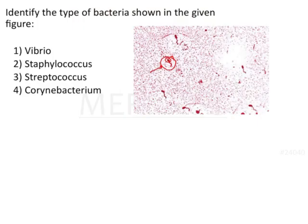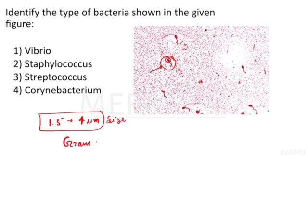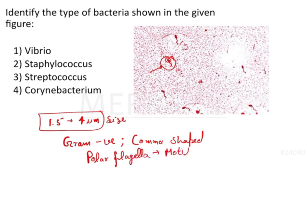Now if we talk about the comma-shaped Vibrio in detail, these bacteria are generally 1.5 to 4 micrometers in size. These are gram-negative bacteria, comma-shaped bacteria. They have polar flagella, and since they have flagella they will be motile. These are motile bacteria. They are sheathed, that means they have capsule on the surface or on their outer body.